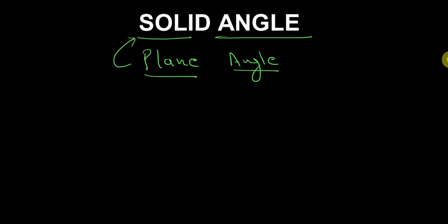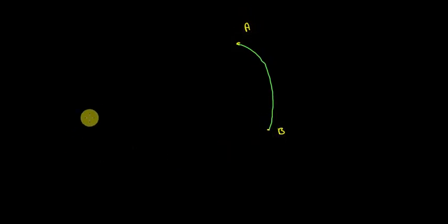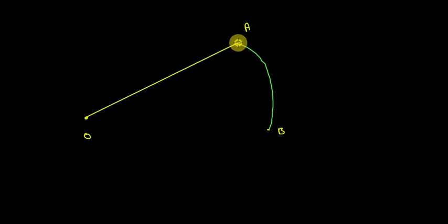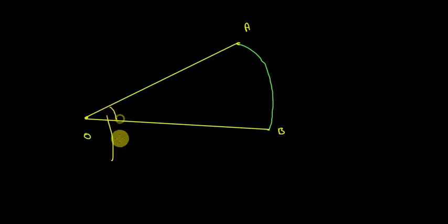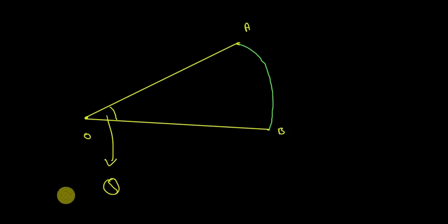Let us ask what is a plane angle and how do we define it. Think in your mind how you would define a plane angle to a five-year-old. Let's make a curve and name the two points at its ends A and B. Now let's take another point O. We join OA and OB. If I ask you where is the angle, you will say it's right here — and we call it theta.